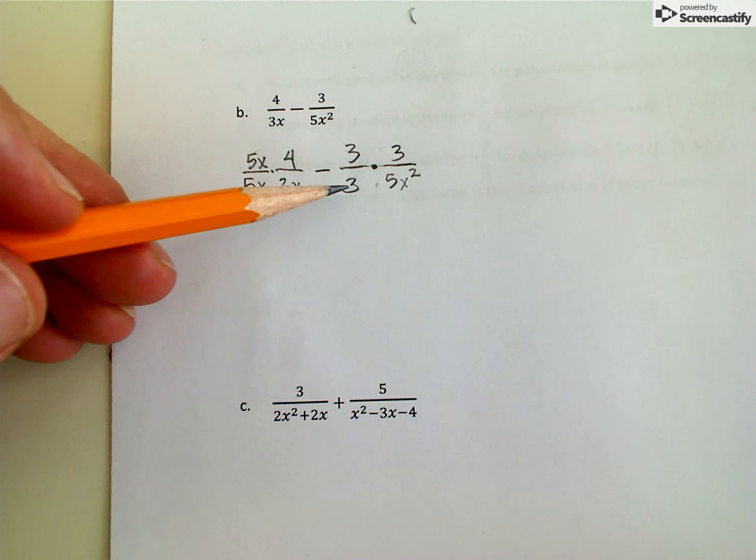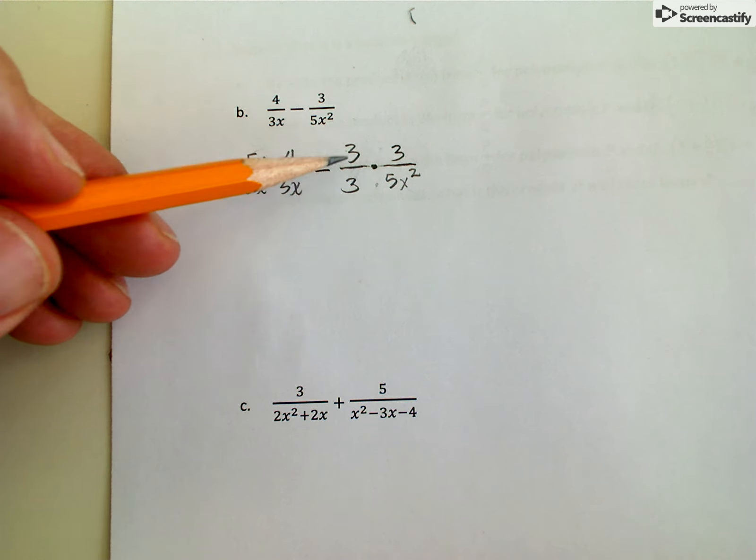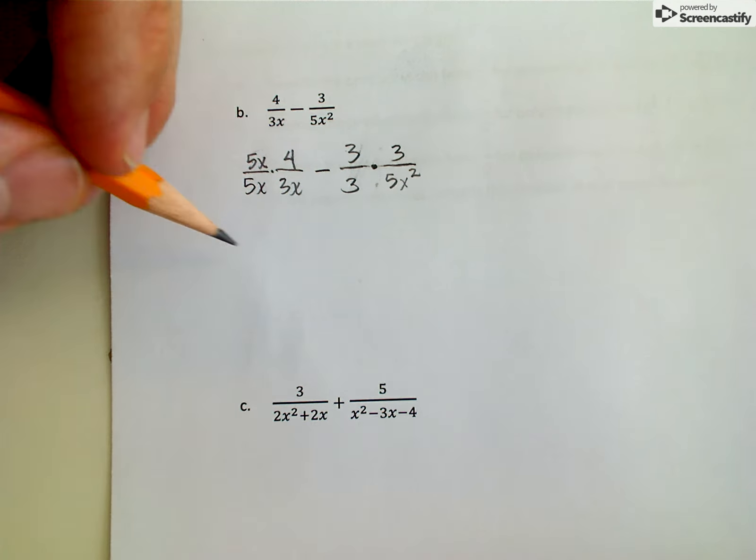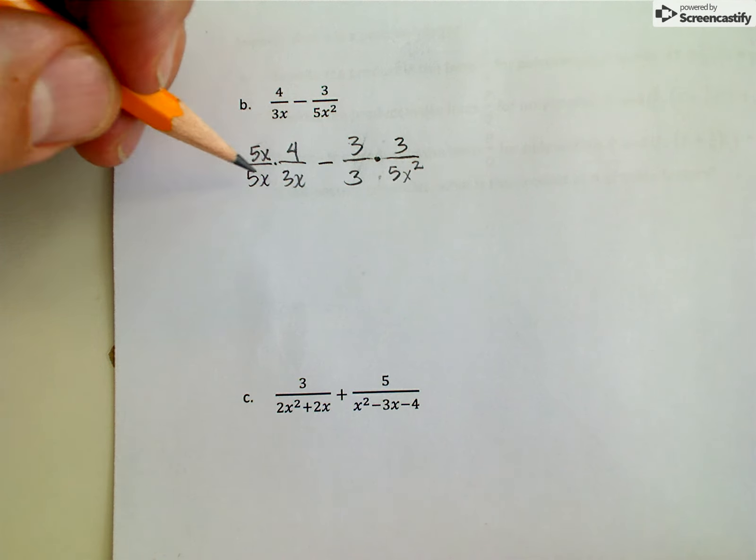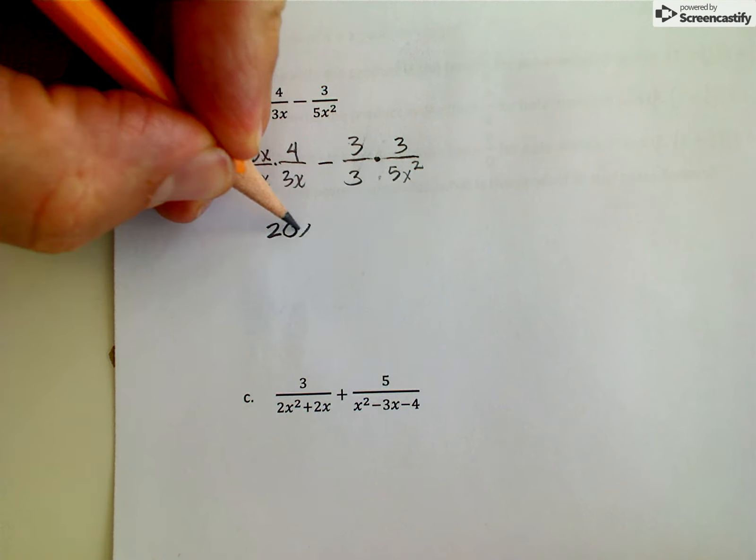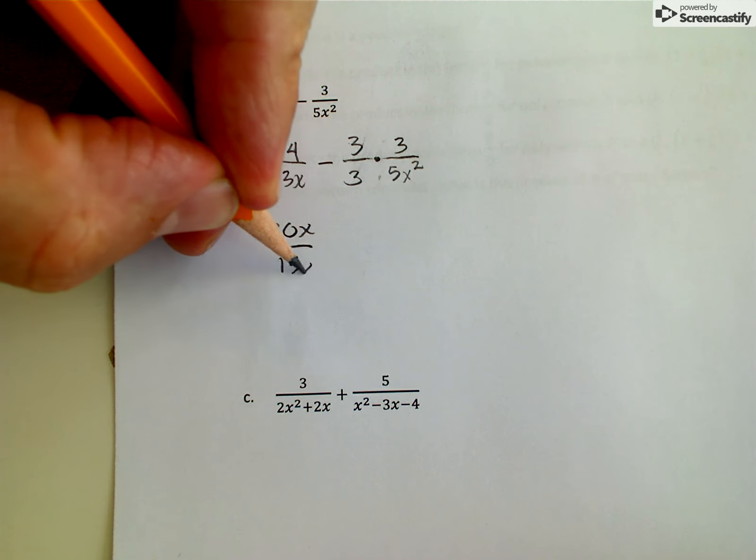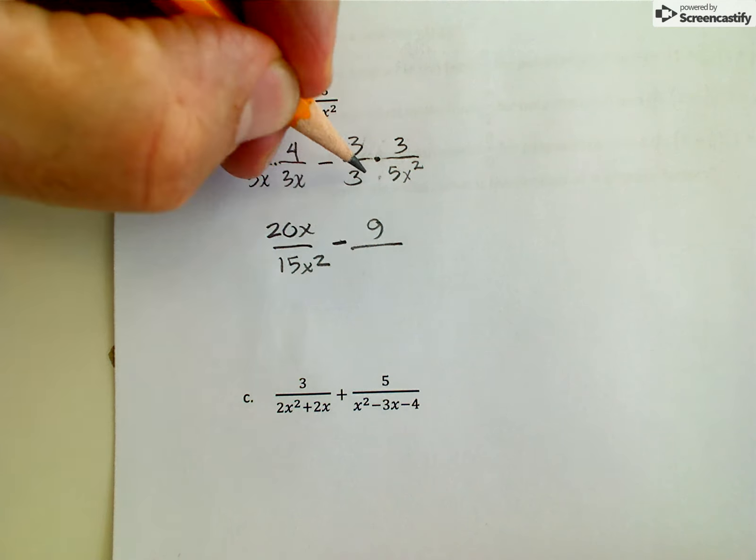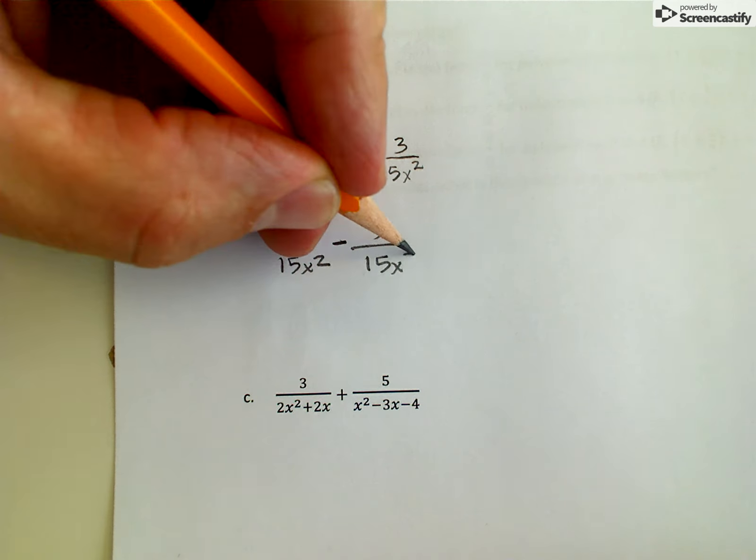Again, my second rational expression, I'm multiplying the top and the bottom by 3, which is really just multiplying by 1. So I'll carry out this multiplication, and I get 20x over 15x squared. And I'm going to subtract 9 over 15x squared.